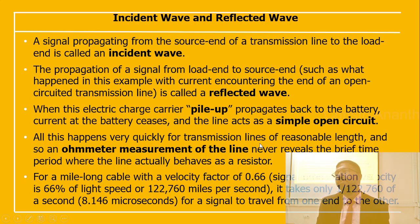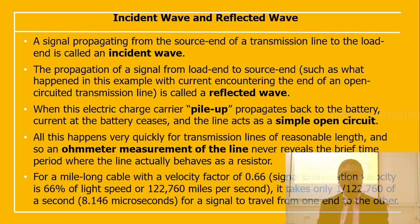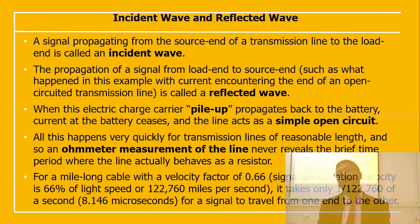A signal propagating from the source end to the load end is called an incident wave. The propagation from the load end back to the source — such as current encountering the end of an open-circuit transmission line — is called a reflected wave. The electric charge carriers pile up back to the battery, and the line acts as a simple open circuit. An ohmmeter measurement of the line will never show the brief time period where the line behaves as a resistor.